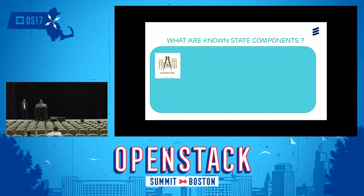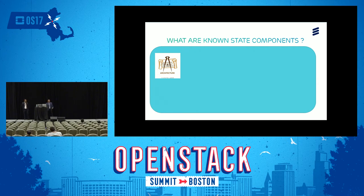Let's go through each component one by one. The first component is reference architecture. With reference architecture, we refer to the standard nomenclature of the servers so that we can identify why these servers were created and what the purpose behind them is. In future, if there are any issues with respect to reference architecture, a troubleshooter can identify the servers just by looking at the name.